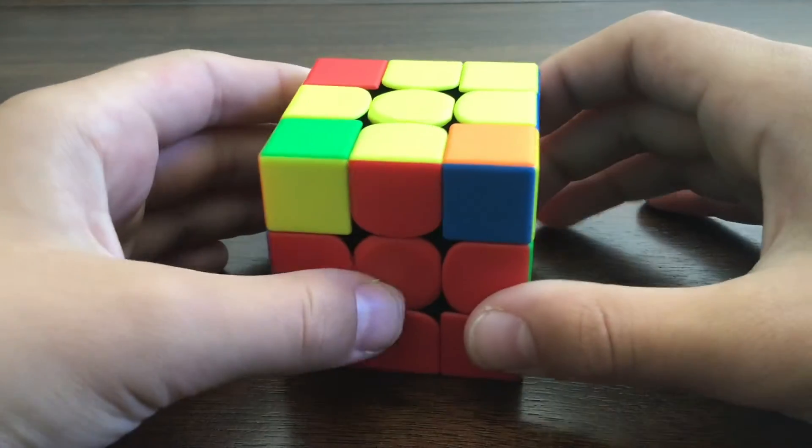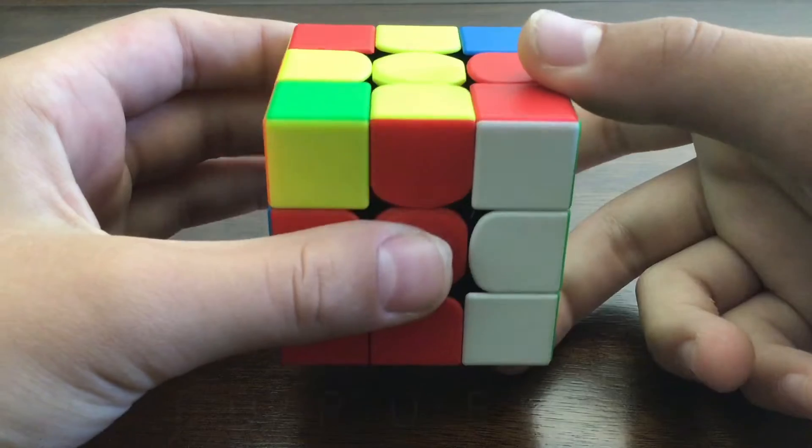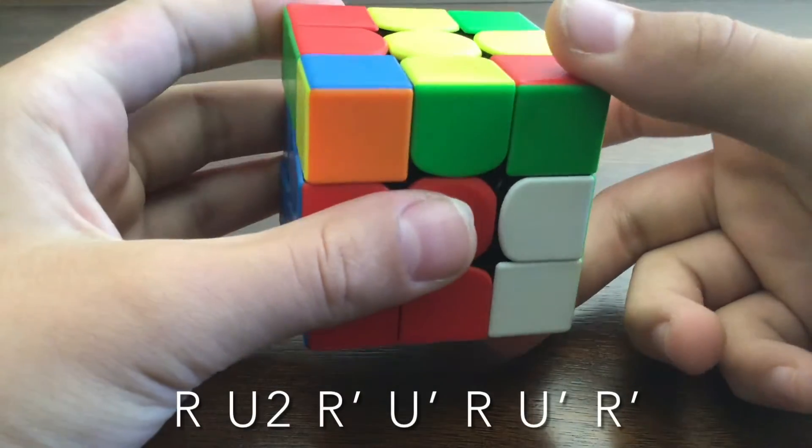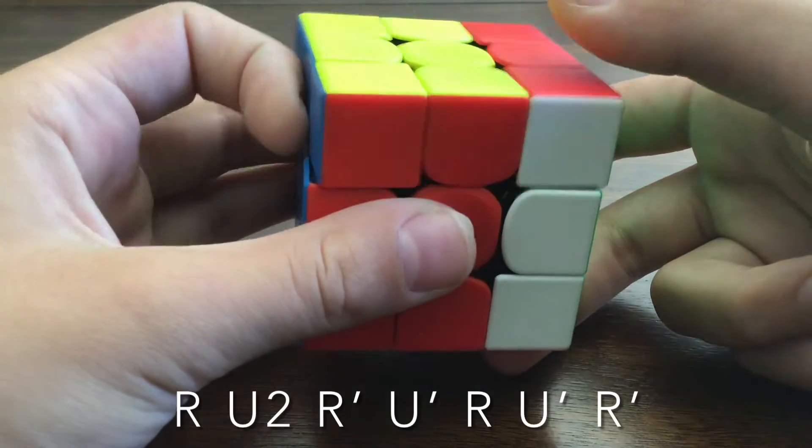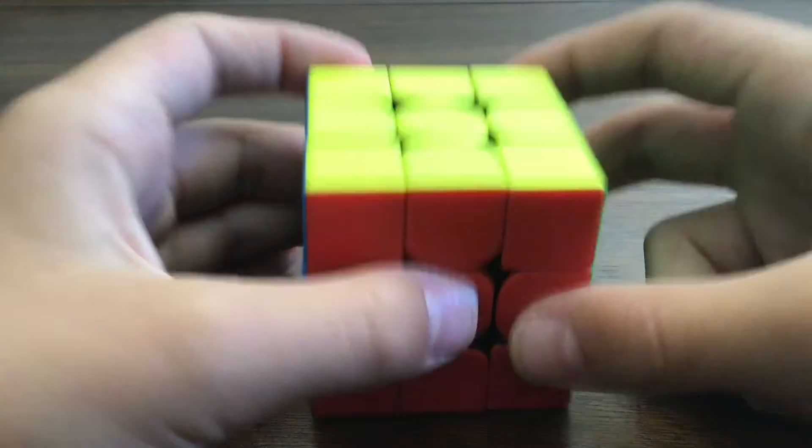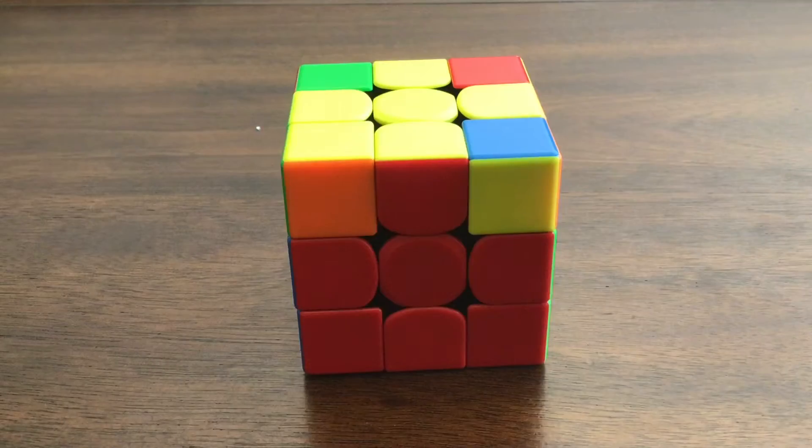For Anti-Sune, you're going to do R, U2, R', U', R, U', R'. So fast, they look like this.